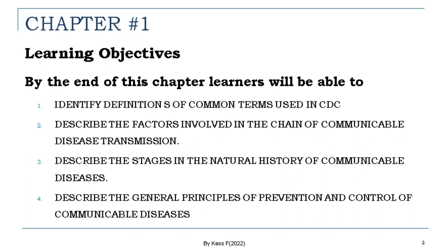Under Chapter 1, we have Learning Objectives. By the end of this chapter, learners will be able to: 1. Identify definitions of common terms used in Communicable Disease and Control. 2. Describe the factors involved in the chain of Communicable Disease Transmission. 3. Describe the stages in the natural history of Communicable Disease. 4. Describe the general principles of prevention and control of Communicable Disease. These are the four learning outcomes.